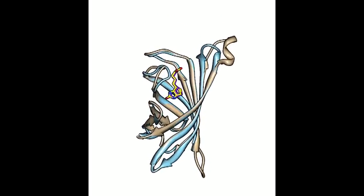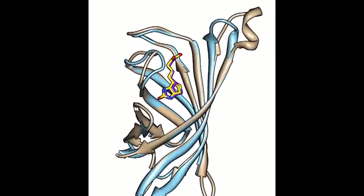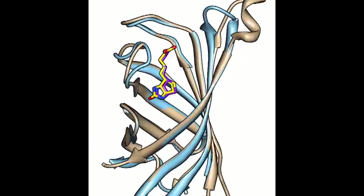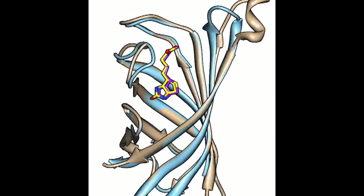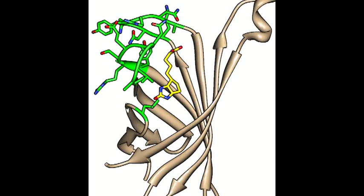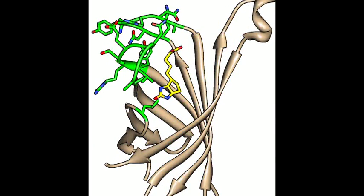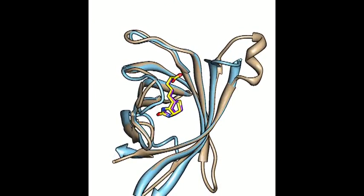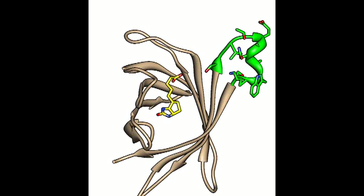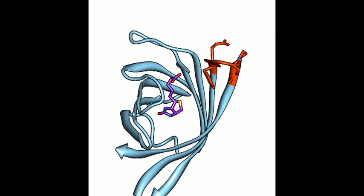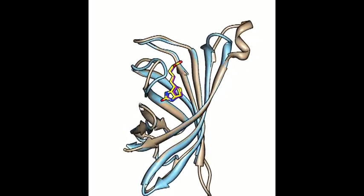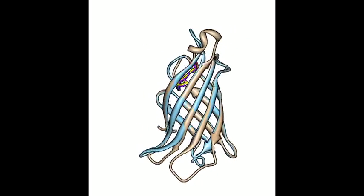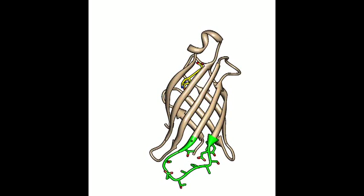We used homology modeling to build a monomer based on streptavidin and rhizavidin. To emulate the interaction between rhizavidin and biotin, we grafted the binding loop from rhizavidin to streptavidin and mutated other residues that may be involved in biotin binding. We also replaced the loop residues located at the opposite end of the beta barrel.